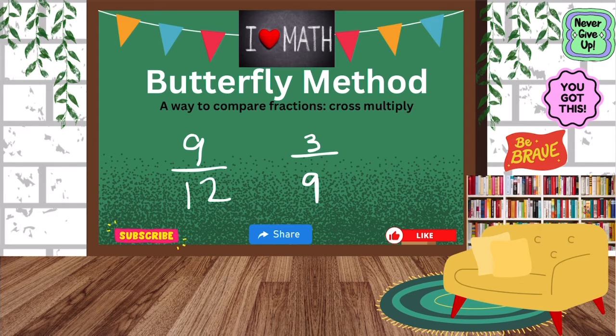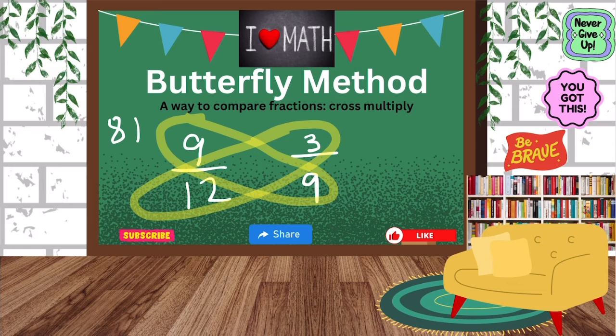Nine times nine is 81. So I'm going to go ahead and write the 81 on this side, and then three times 12 is 36. So now we are working with 81 and 36. Oh, let me write the 36.